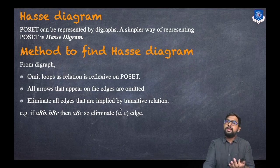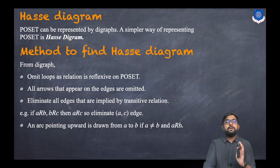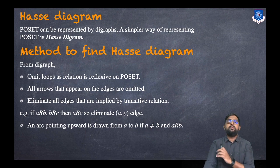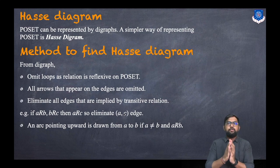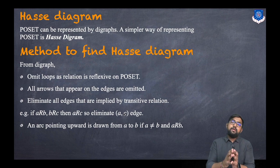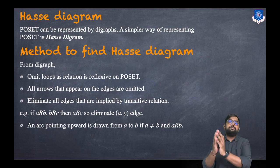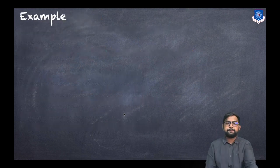The fourth step: an arc pointing upward is drawn from A to B if A ≠ B and A is related to B. We draw all arcs in the upward direction so that just by looking at the graph we will be able to say that this point is related to that point.